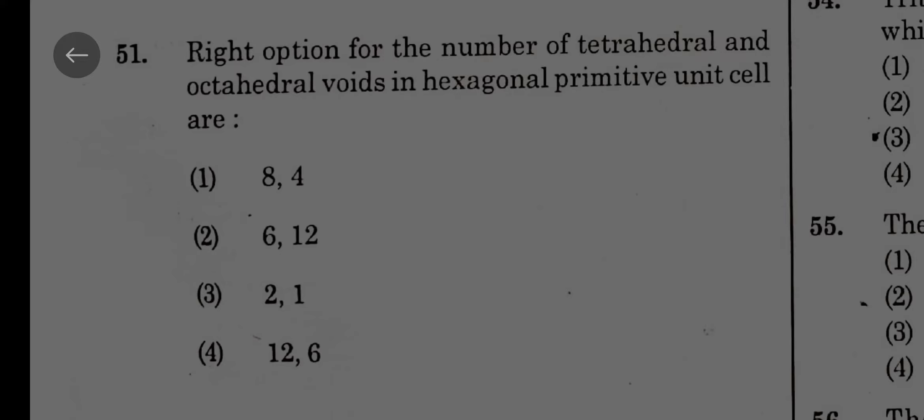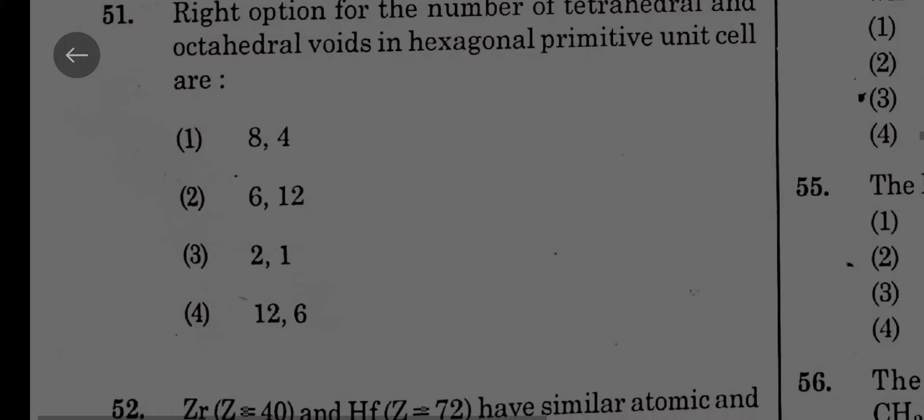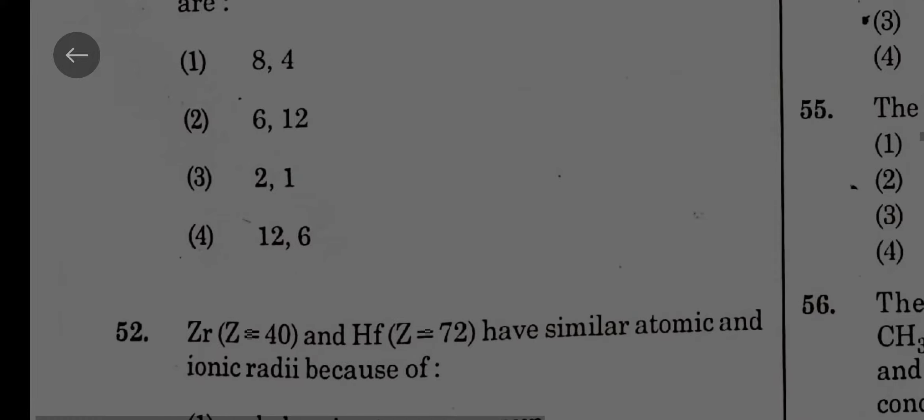Hello, chemistry NEET 2021 paper discussion. The right option for the number of tetrahedral and octahedral voids in hexagonal primitive unit cells is 12 and 6. Tetrahedral 12, octahedral 6.